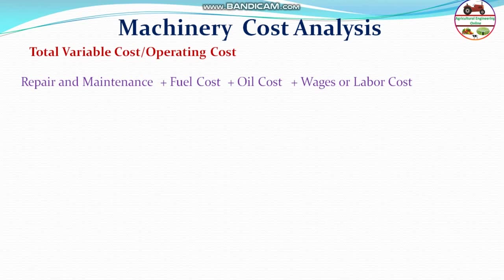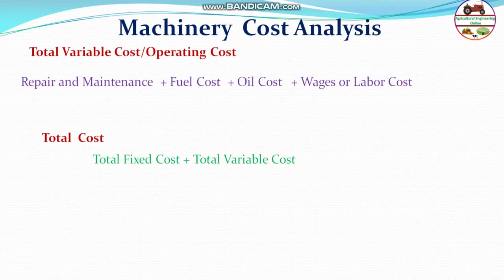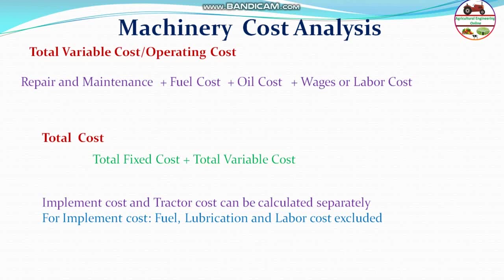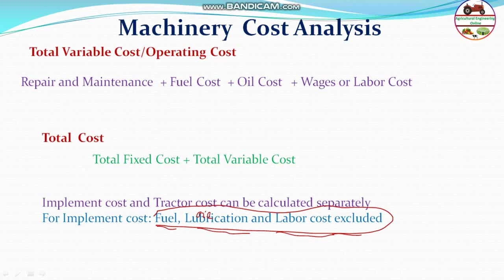After knowing all these costs, total cost of machine operation is calculated as total fixed cost plus total variable cost. Implement cost and tractor cost can be calculated separately and then added together when there is a tractor and implement combination. For implement cost, fuel cost, lubrication cost, and labor cost can be excluded, because implements do not use fuel, lubrication, or labor directly — these are associated with the tractor.